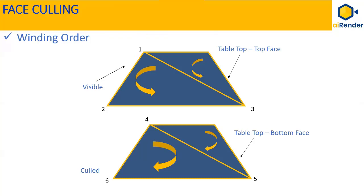As you can see, the vertices of one of the triangles on the top face of the table top are numbered from 1 to 3 in counter-clockwise direction.